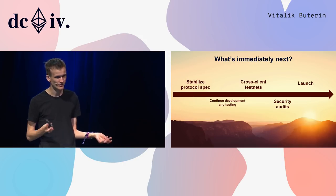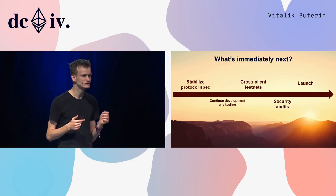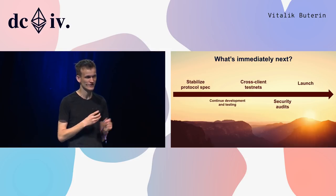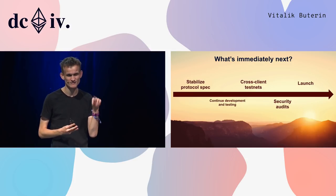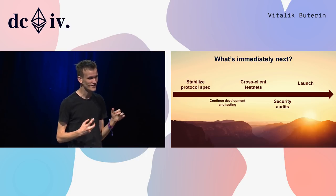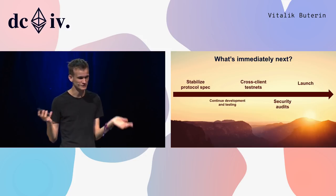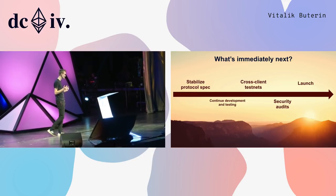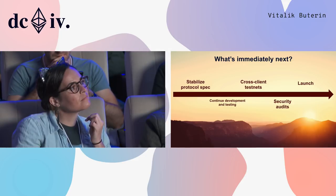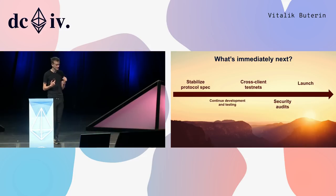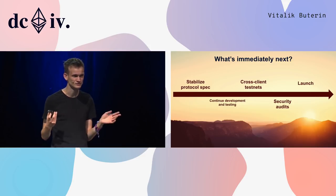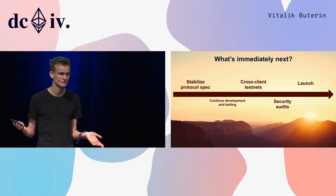What's next immediately? First, stabilizing the protocol spec — for those watching the ethereum/eth2.0-specs GitHub repository, the spec has been moving fairly quickly but will stabilize soon. There are something like eight implementations of the Ethereum 2.0 protocol happening now. On cross-client testnets, Afri made a statement hoping to see real cross-client work picking up in Q1 next year — it would definitely be nice to see test networking between two implementations.